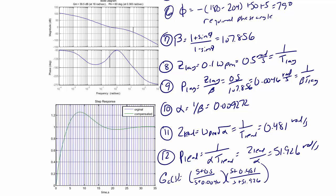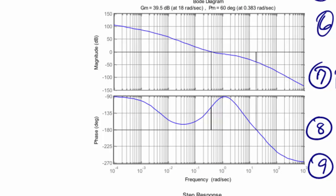And now let's check our work by looking at the step response and the Bode plot after compensation. So looking at the Bode plot first, we do see the signs that we have a lag lead compensator in the fact that we have this dip here for the lag compensator and this peak here for the lead compensator.